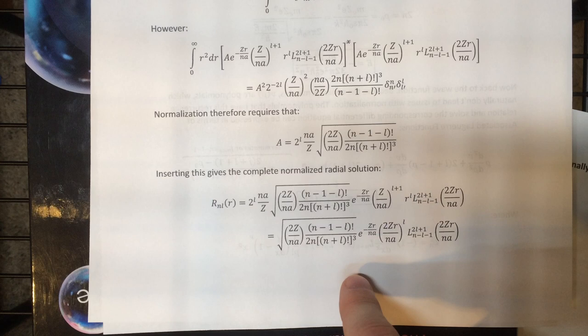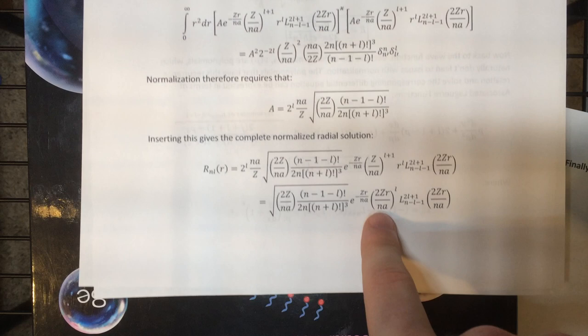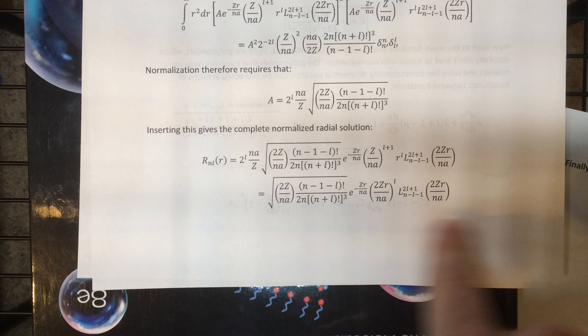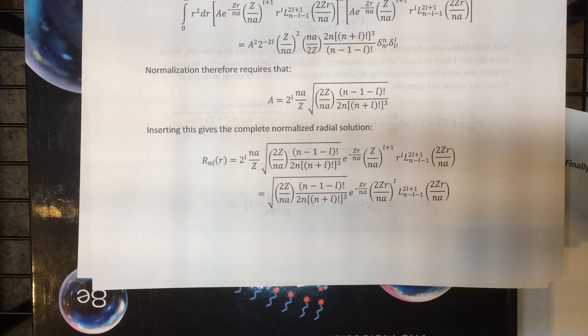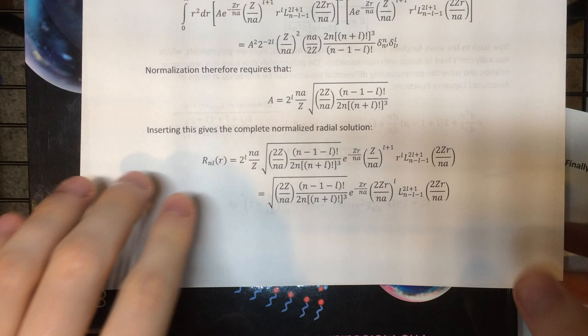We know the full solution is just the product of the two parts — the radial part of the wave function and the angular part — which we both solved for and normalized. So that gives us the full solution to the Schrödinger equation for the hydrogen atom. And it is very beautiful.